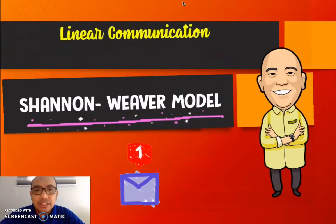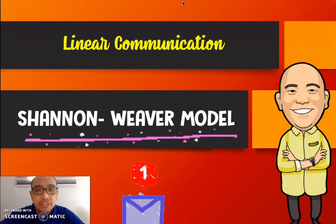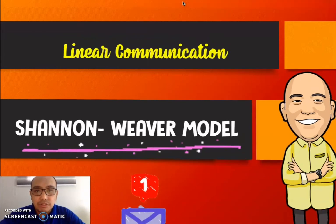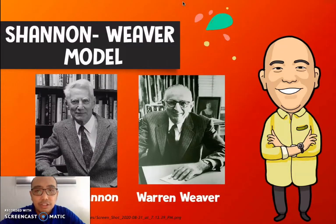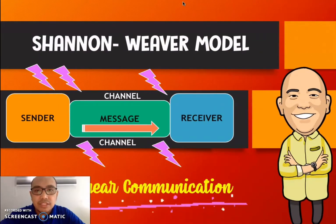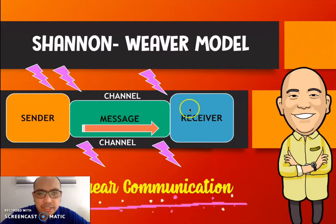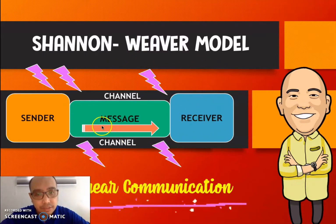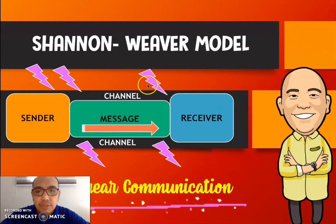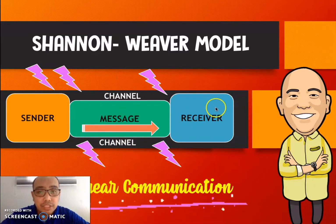First, we have linear communication. The best example of linear communication is the Shannon-Weaver model. The proponents of this model are Claude Shannon and Warren Weaver. According to them, linear communication is just a one-way process wherein the sender gives the message to the receiver. The receiver doesn't give any feedback or response to the sender. Noise is still present during the communication process.